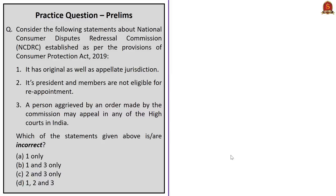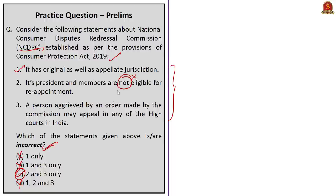The next question is based on the National Consumer Disputes Redressal Commission established under the Consumer Protection Act 2019. Three statements are given and we have to choose the incorrect statements. The first statement — NCDRC has original as well as appellate jurisdiction — is correct. Since the first statement is correct, one should not be in the answer, so eliminate options A, B and D. The correct answer is option C — two and three only. The second statement says its president and members are not eligible for reappointment — this is wrong because they are eligible for reappointment. The third statement says a person aggrieved by an order may appeal in any of the High Courts — this is also wrong because they can appeal only in the Supreme Court.